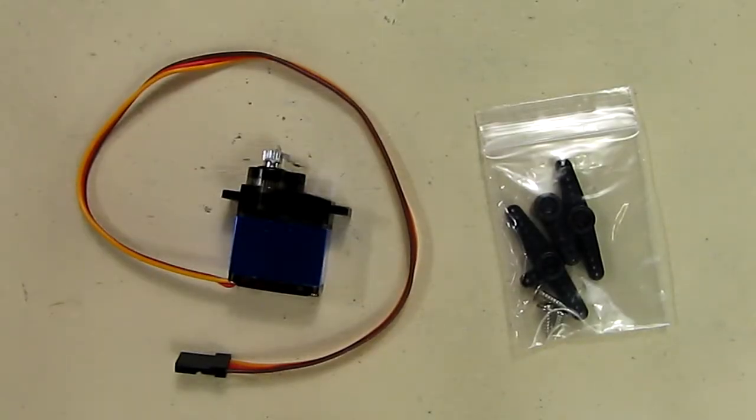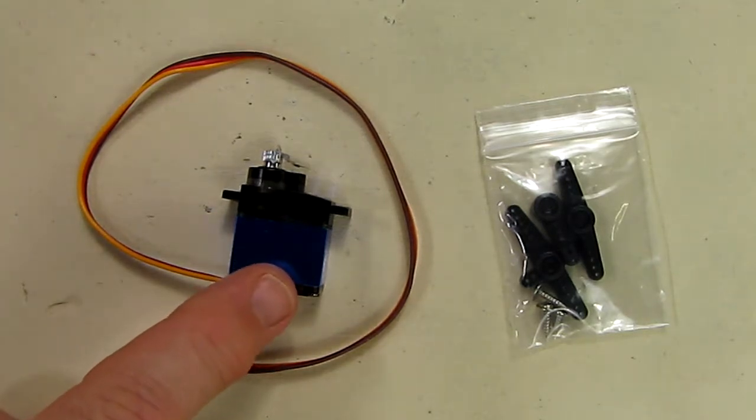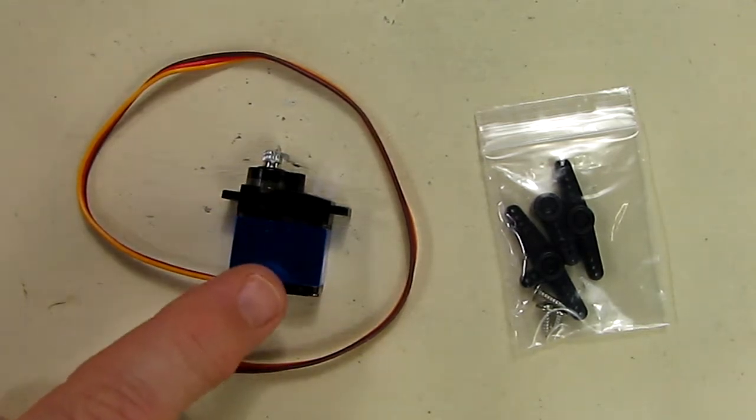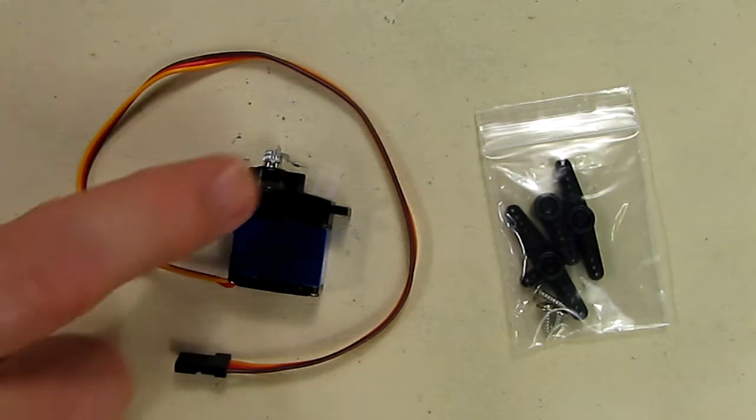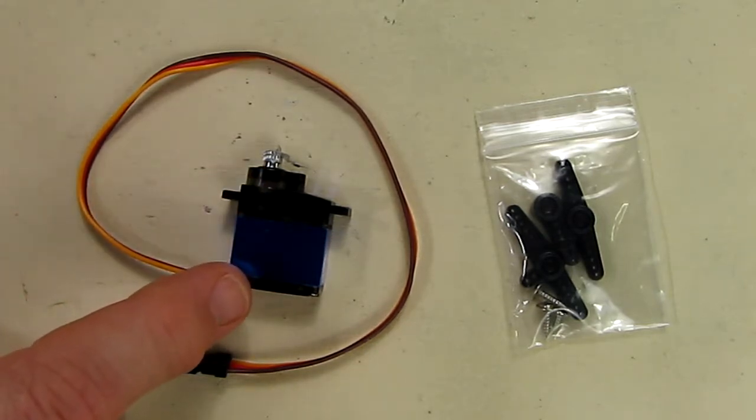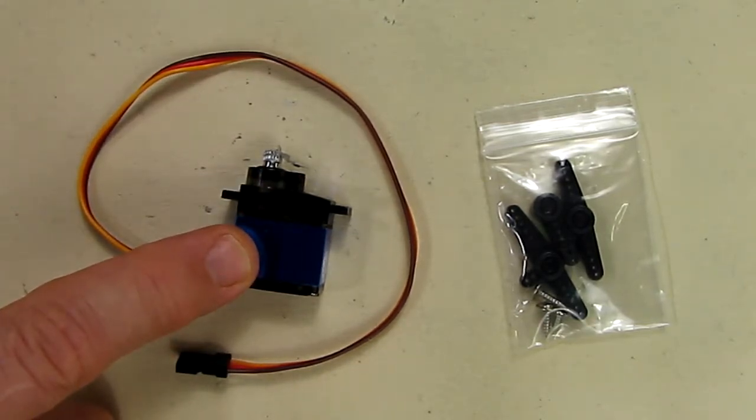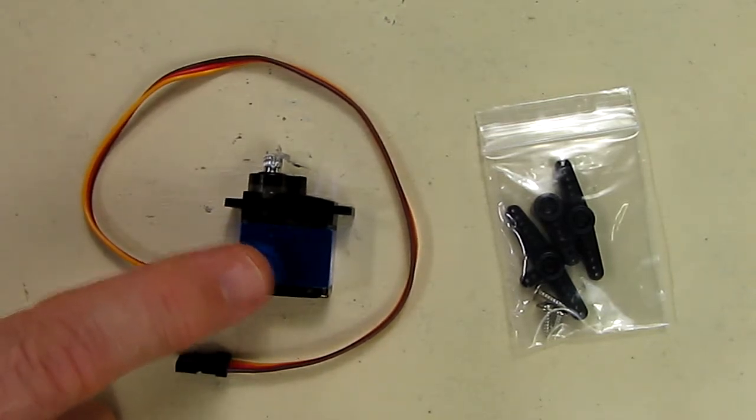Hello again, this is Robert Veach here, and this is my video review of the TowerPro 14 gram MG92B. This is a digital servo with metal gears, upper and lower ball bearings. It's considered a high torque sub-micro servo because the torque is pretty high considering its size.